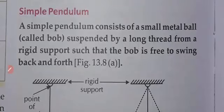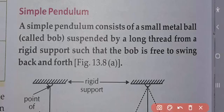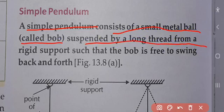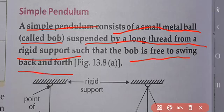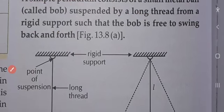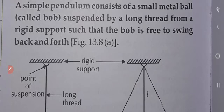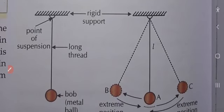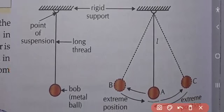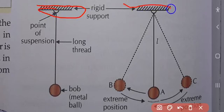Welcome. The next topic is the simple pendulum. A simple pendulum consists of a small metal ball called a bob, suspended by a long thread from a rigid support, such that the bob is free to swing back and forth.